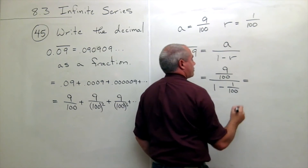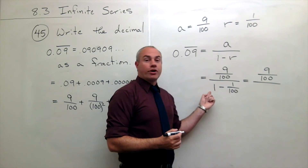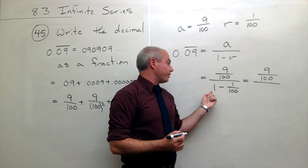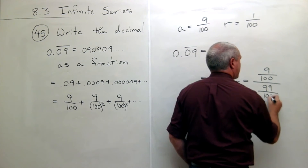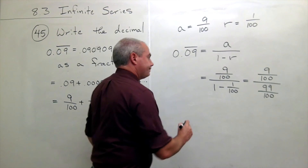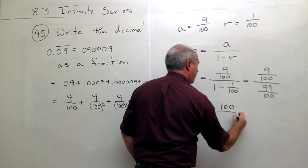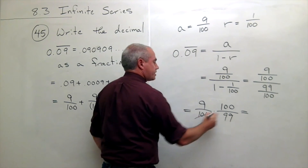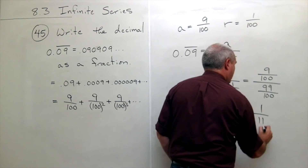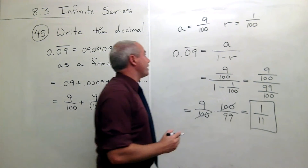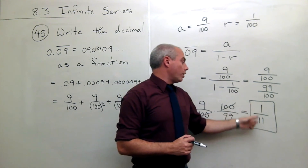That's the same thing as writing 9 over 100, divided by 99 over 100 — since 1 is 100 over 100, so 100 hundredths minus 1 hundredth gives 99 hundredths. Now I flip and multiply, and I get 9 over 100 times 100 over 99. The hundreds cancel, and I'm left with 9 over 99, which is otherwise known as 1 over 11. So 0.09 repeated as a fraction is 1 over 11.